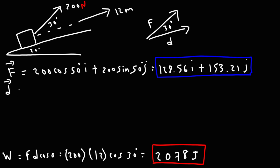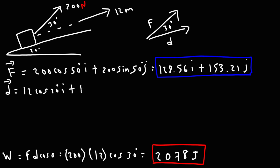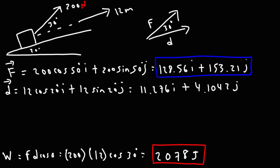Now let's write the displacement vector in component form. The magnitude is 12 meters and it's 20 degrees above the horizontal (along the incline). So it's 12 cosine 20 degrees times i plus 12 sine 20 times j, which equals 11.276i plus 4.1042j.